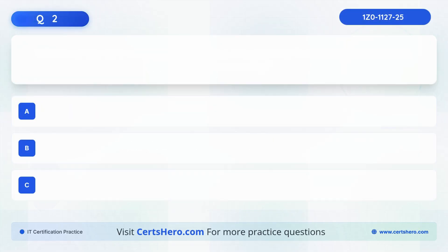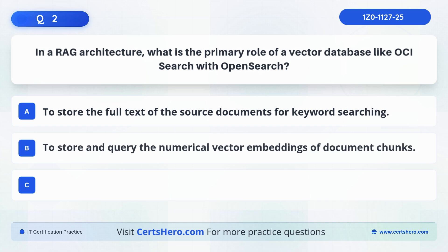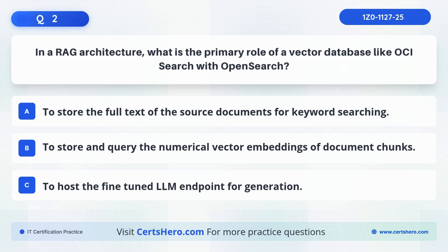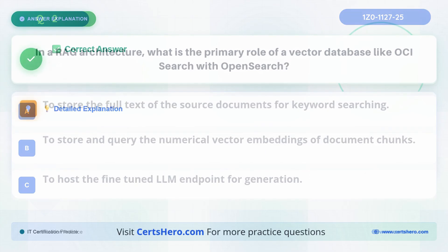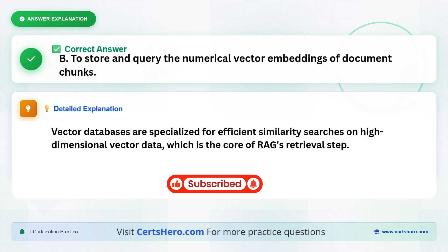Question 2. In a RAG architecture, what is the primary role of a vector database like OCI Search with OpenSearch? Is it to store the full text of the source documents for keyword searching, to store and query the numerical vector embeddings of document chunks, or to host the fine-tuned LLM endpoint for generation? The correct answer is B, to store and query the numerical vector embeddings of document chunks. Vector databases are specialized for efficient similarity searches on high-dimensional vector data, which is the core of RAG's retrieval step.